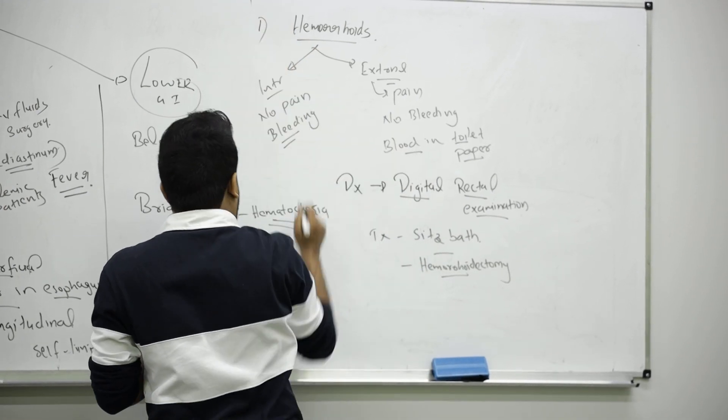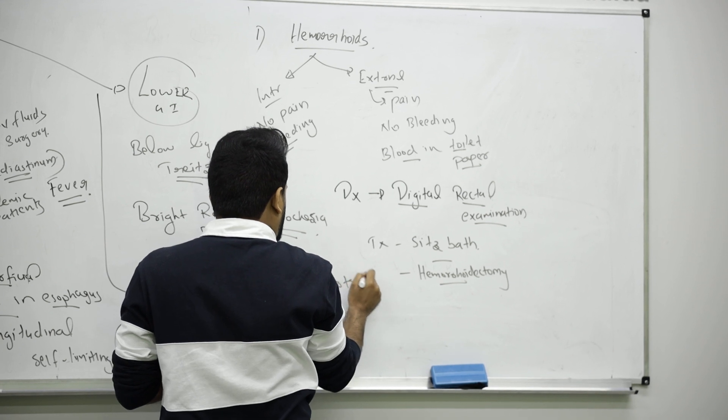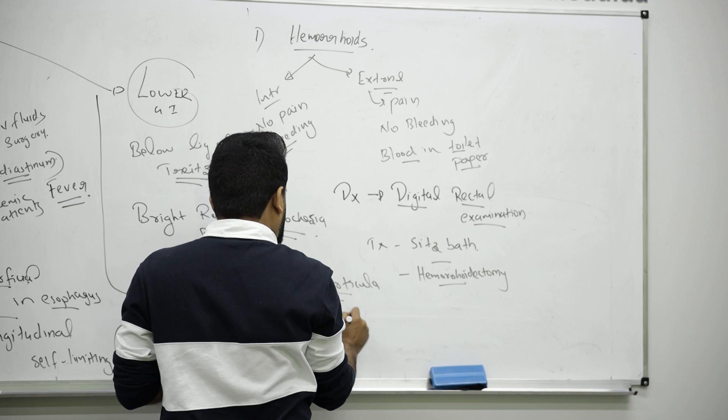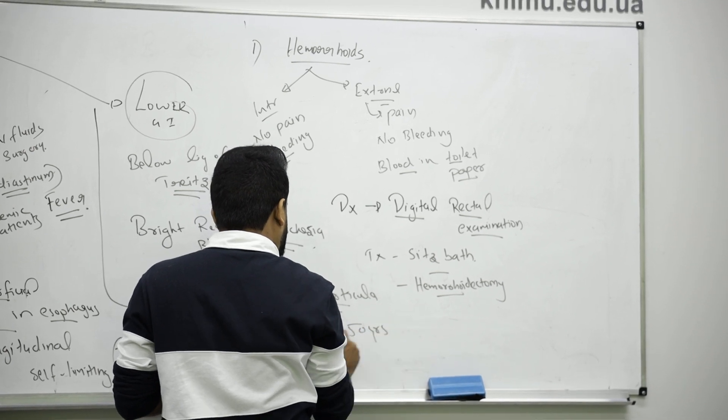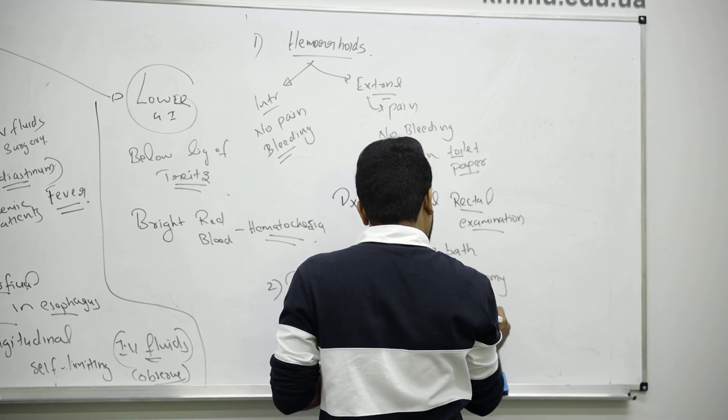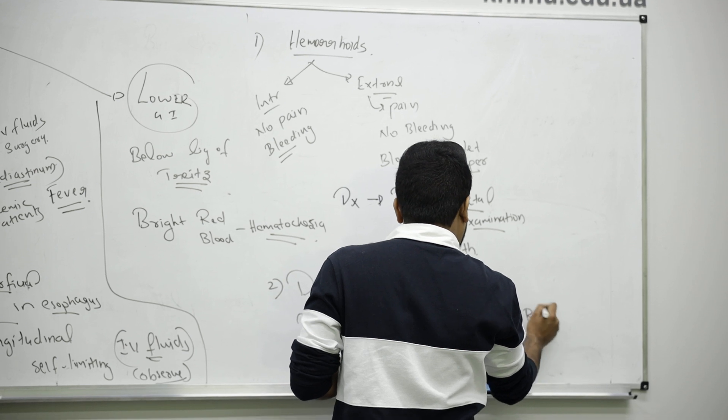One is hemorrhoids for lower GI bleed. Second one is diverticulosis. In aged population more than 50 years, you can see diverticulosis. You will have painless bright red bleed from the rectum.